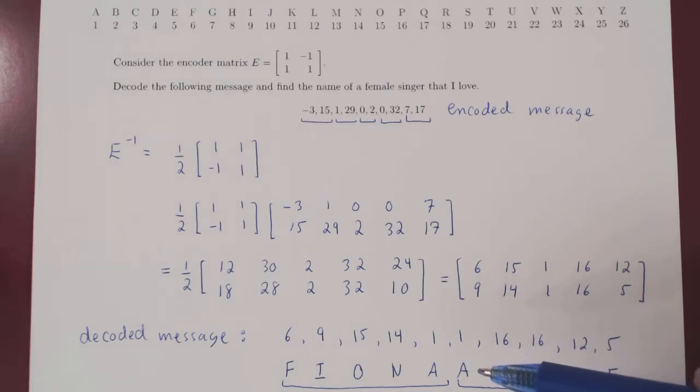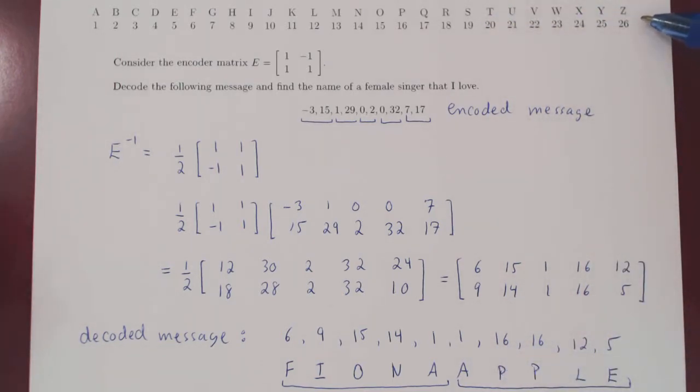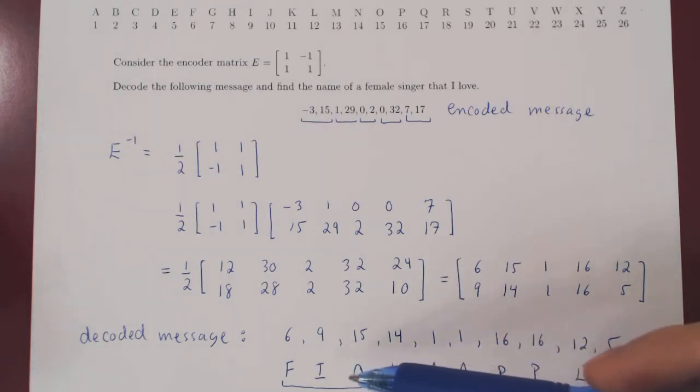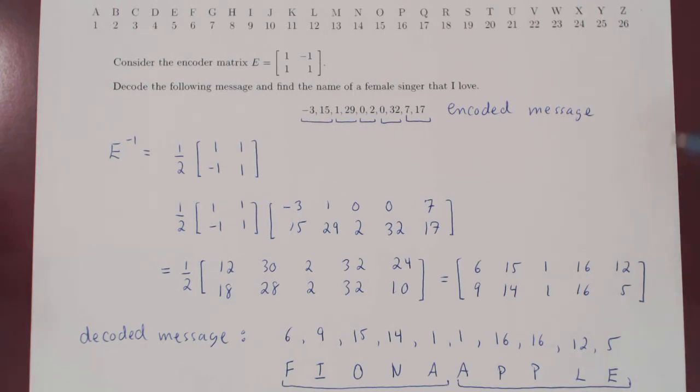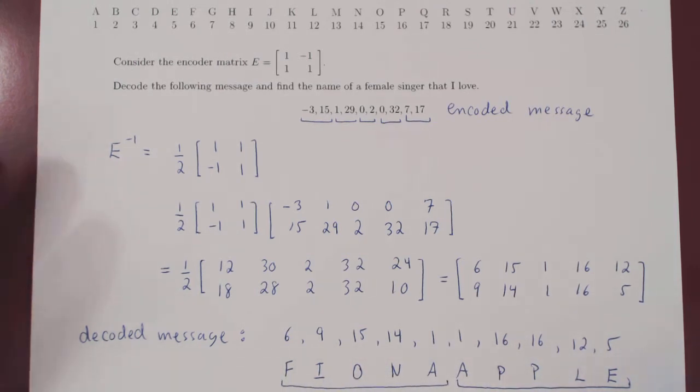Now one last little comment. As you can see, since we're not including an empty space as one of our characters, where we could add an empty space for the number 27, then we have to figure out where the break is between the different words. Now obviously in real life, if you would encode much longer messages, you would need to enter as an extra character an empty space, so as to make the reading of the decoded message simpler. And that's it.